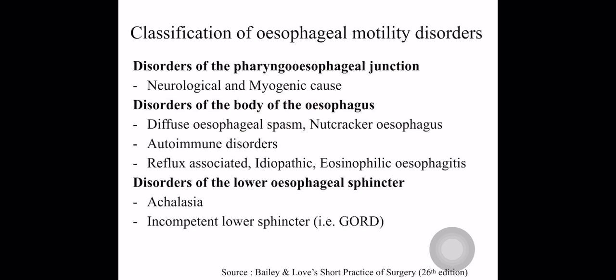Pharyngoesophageal junction disorders are due to neurological or myogenic causes, for example stroke. Disorders of the body of esophagus include diffuse esophageal spasm, nutcracker esophagus, autoimmune disorders like SLE, systemic sclerosis, reflux-associated esophagitis, eosinophilic esophagitis, and idiopathic esophagitis.